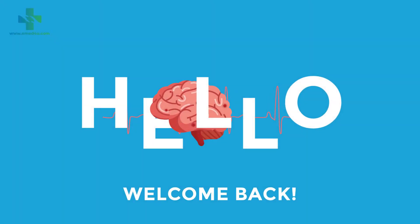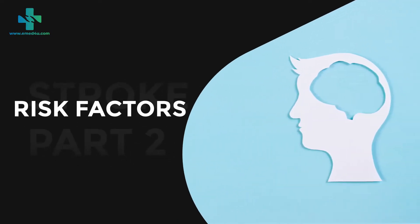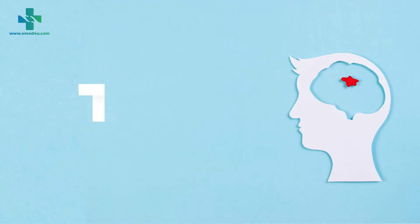Hello and welcome back. Before we talk about risk factors and types of stroke, it is important to understand two important definitions. Number one: stroke essentially means a condition where the blood supply to a part of the brain is cut off.